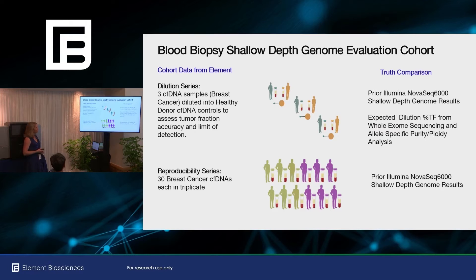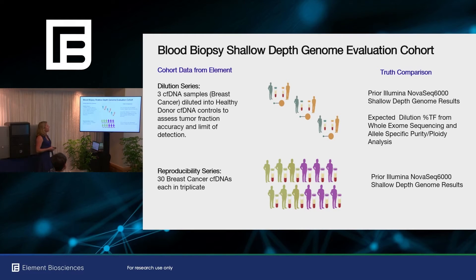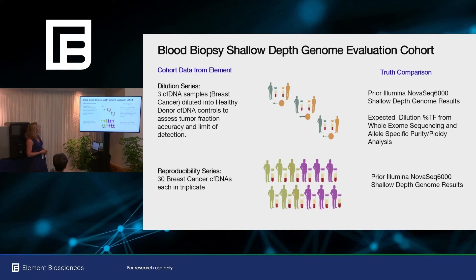We evaluated two cohorts of samples. The first cohort is a dilution series of high tumor fraction cell-free DNA samples diluted with healthy donor cell-free DNA with no evidence of tumor. We compared that to our prior Illumina clinical validation results, as well as expected dilution tumor fractions from whole exomes sequenced as an entirely orthogonal comparison — where we use a much more granular allele-specific purity and ploidy estimation. We also sequenced 30 breast cancer cell-free DNAs in triplicate to see how the Element sequencer performs on actual real patient samples.